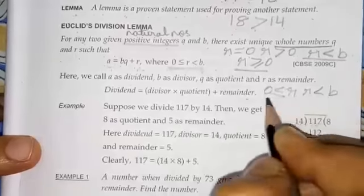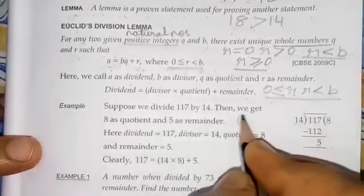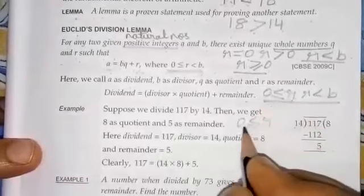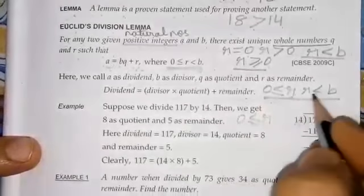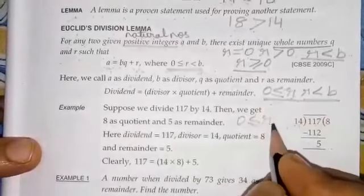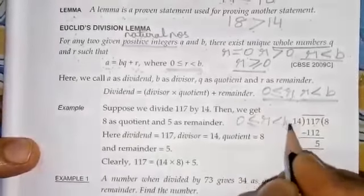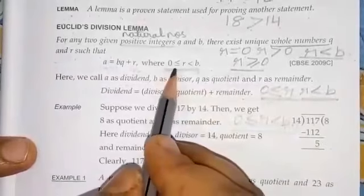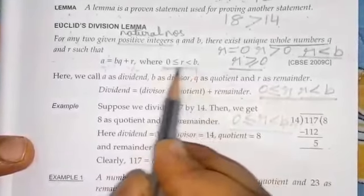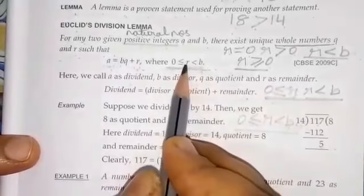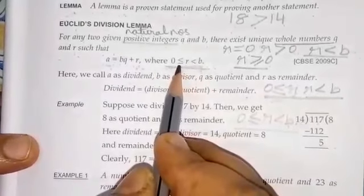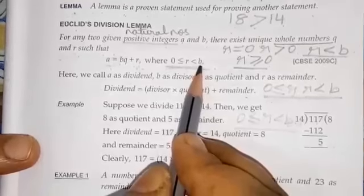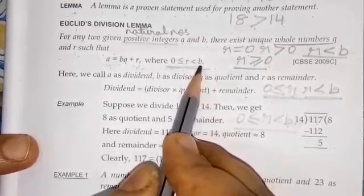Together, we write: 0 ≤ r < b. This means the remainder can be 0, or anything more than 0, but less than b — less than the divisor.